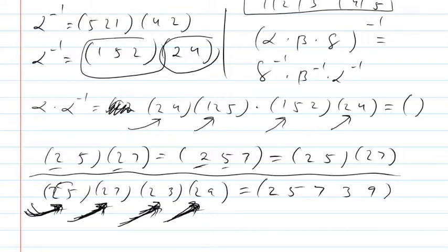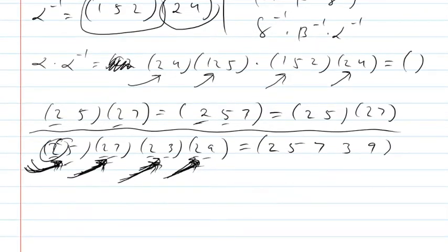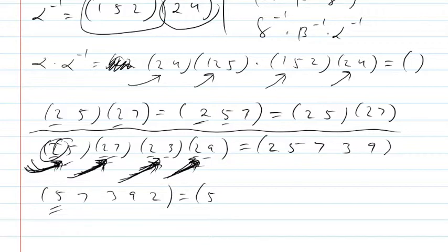So if we have a whole bunch of 2-cycles that each have the same first number, when we put them together we end up with a big cycle that has it as its first number, and the other numbers become second, third, fourth, and so on. This can work in reverse also — if I have any big cycle, like (5, 7, 3, 9, 1) or whatever it is.